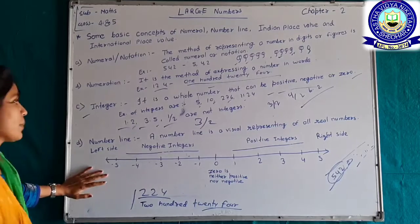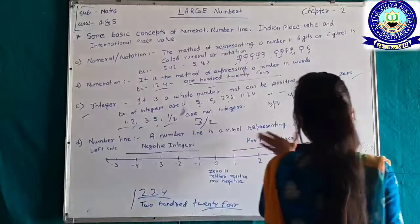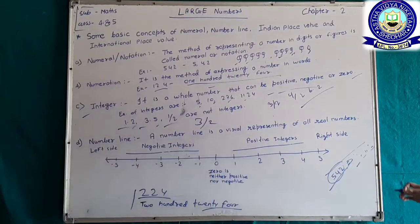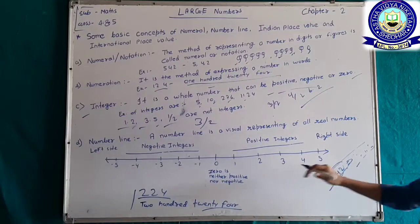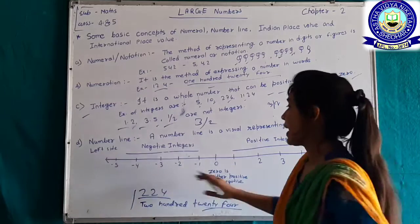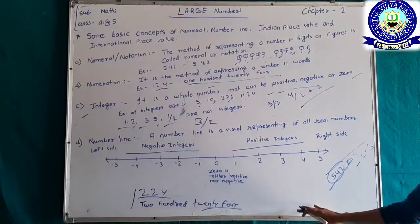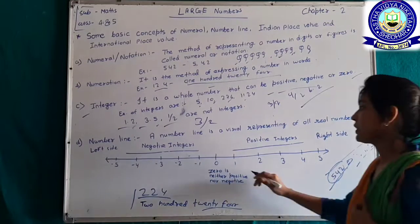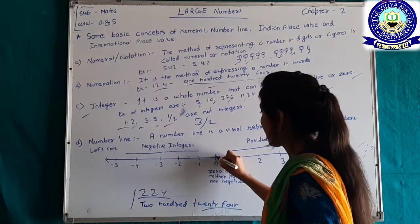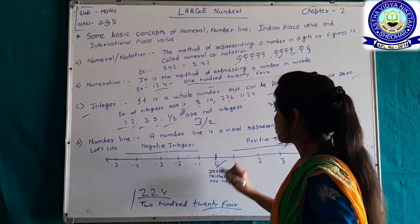And next, what is a number line? A number line is a visual representation of all real numbers. When we represent some numbers on a line, it is called our number line. In a number line, there is a horizontal point 0.